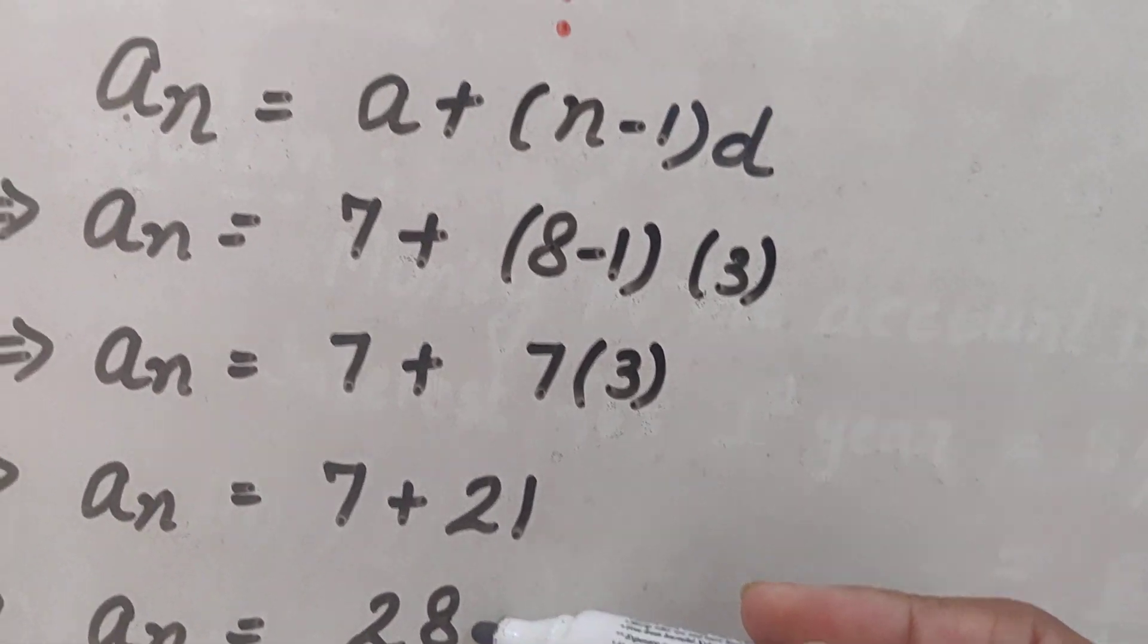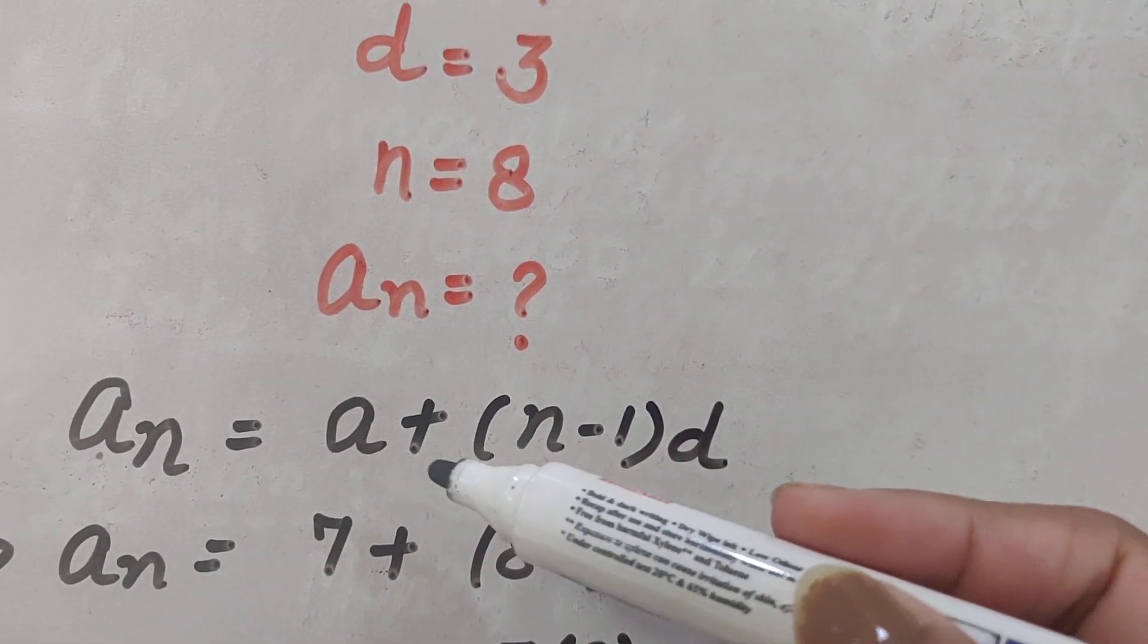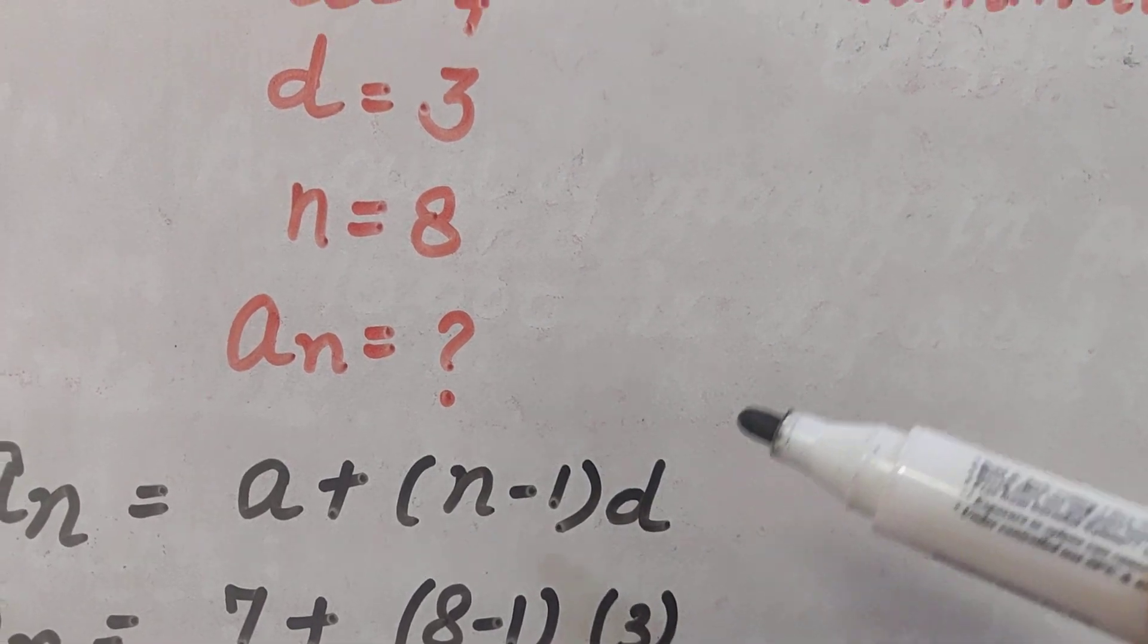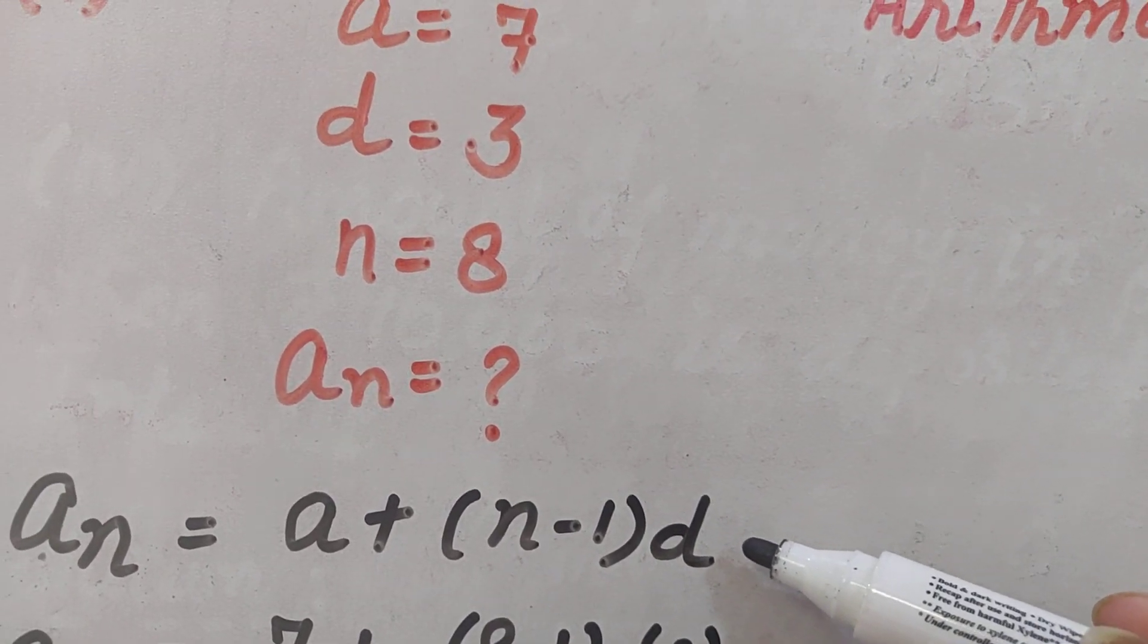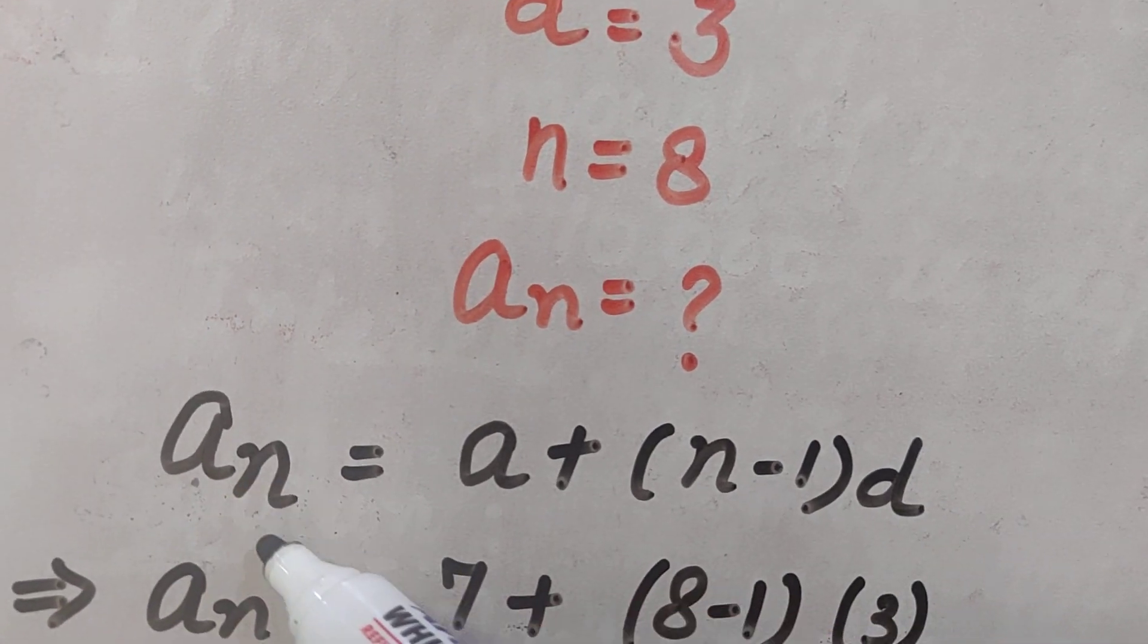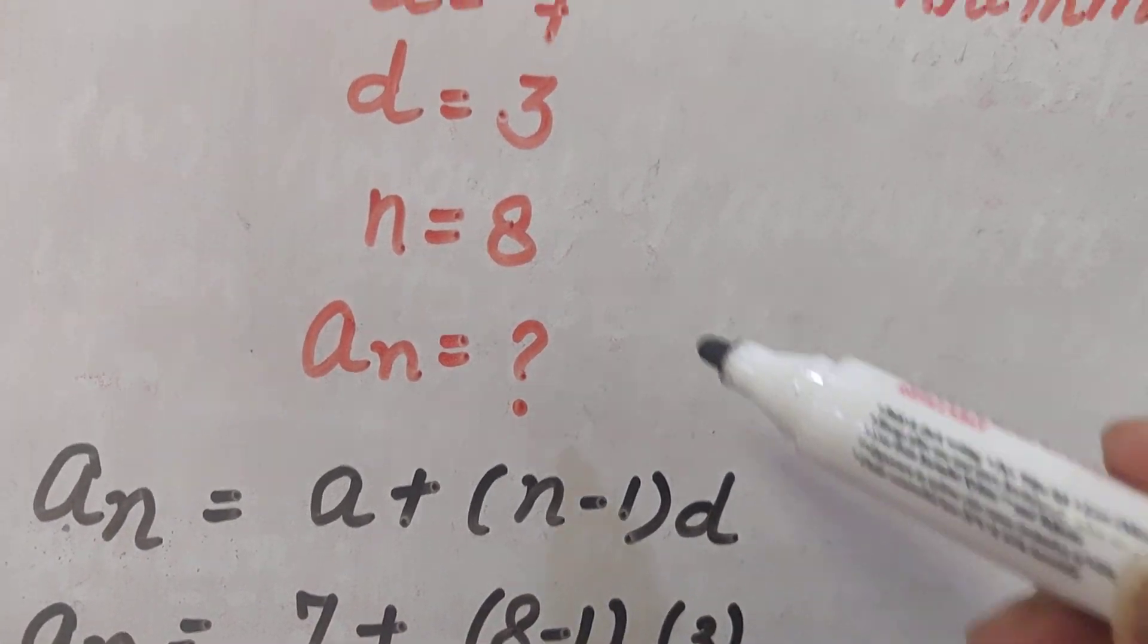Okay, this is AN. AN is equal to A plus N minus 1D. In the last video, I told you how to derive this formula and the formula for finding AN is A plus N minus 1D.